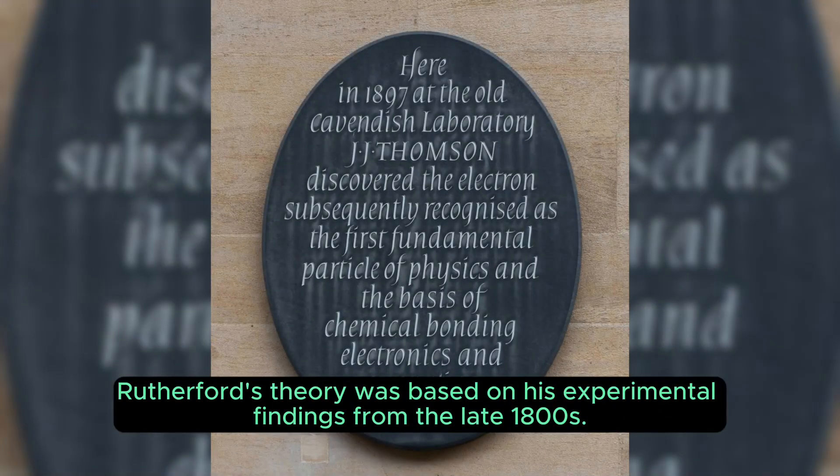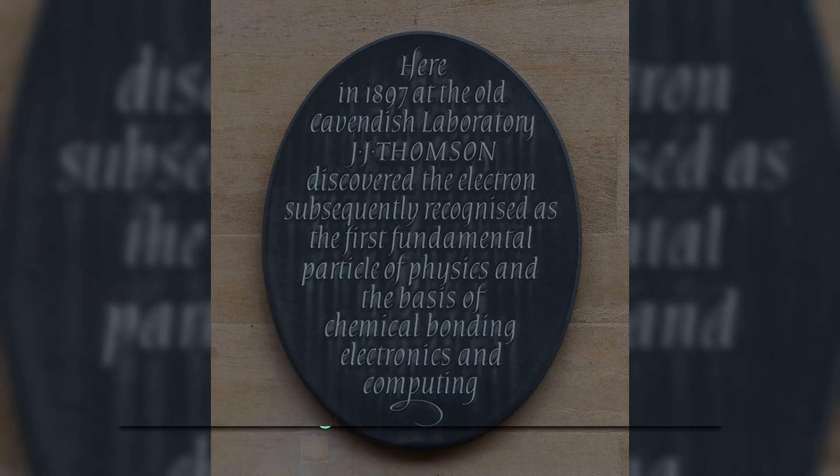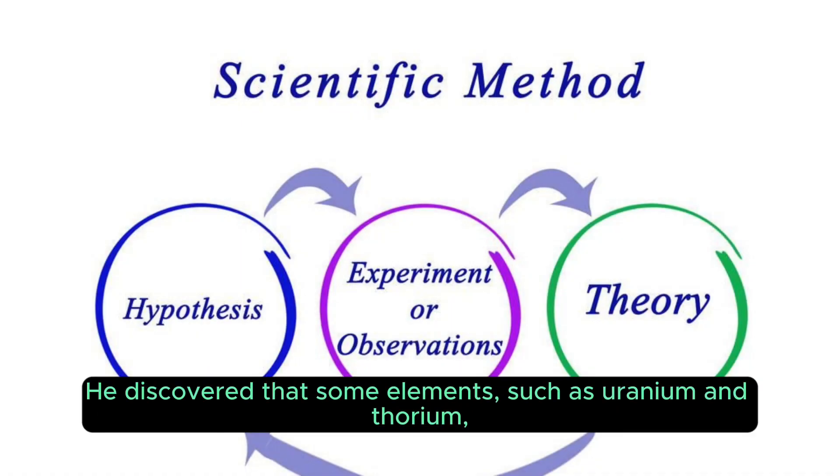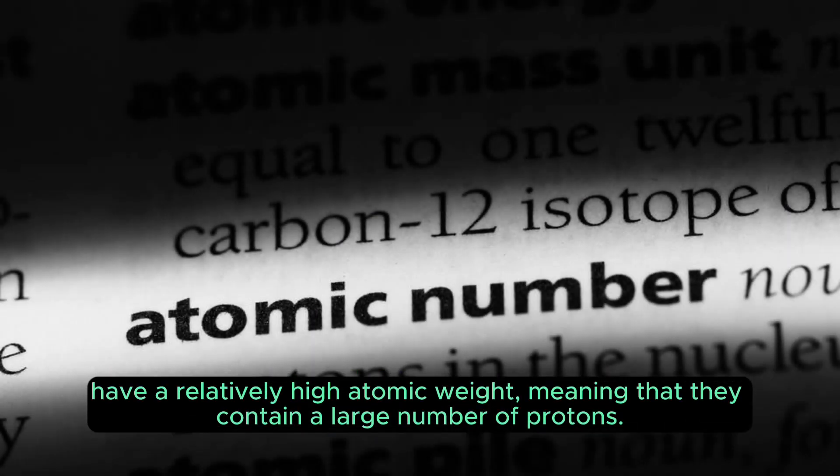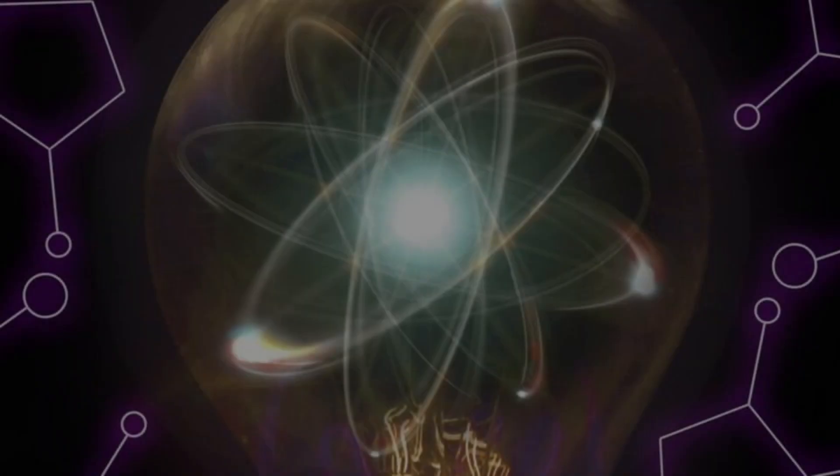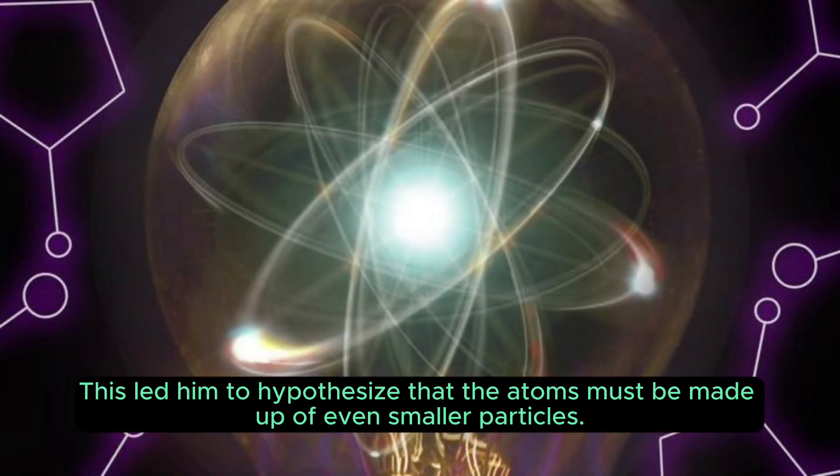Rutherford's theory was based on his experimental findings from the late 1800s. He discovered that some elements, such as uranium and thorium, have a relatively high atomic weight, meaning that they contain a large number of protons. This led him to hypothesize that the atoms must be made up of even smaller particles.